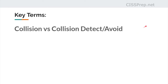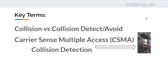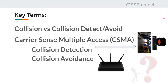Some key terms: collision comes up a couple of times. In domain three, a collision in a hash is when the same output is generated from different inputs. Then you have collision detection and collision avoidance related to CSMA — carrier sense multiple access. Collision detection relates to ethernet: it waits a random amount of time before retransmitting to get a clear transmission. Collision avoidance relates to wireless technologies and uses a request to send (RTS) and clear to send (CTS) signal exchanged between devices before they actually transmit.